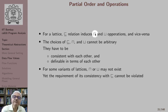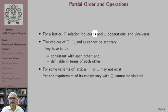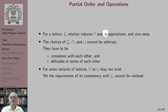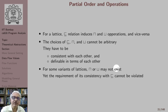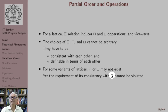Note that the meet operation is also called a GLB operation and the join operation is also called a LUB operation. For some variants of lattices, one of these operations may not exist, yet the requirement of consistency with the weaker-than relation cannot be violated.